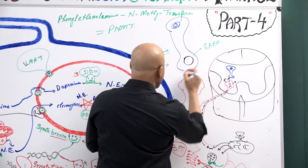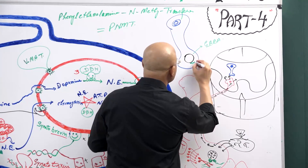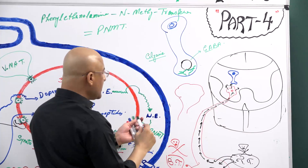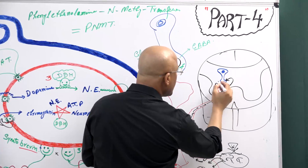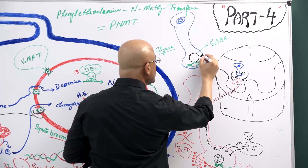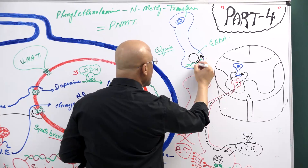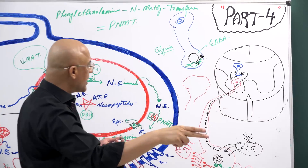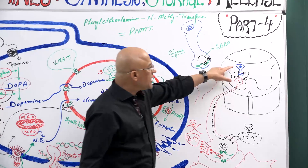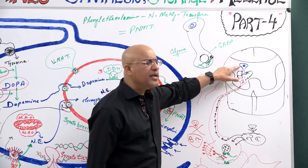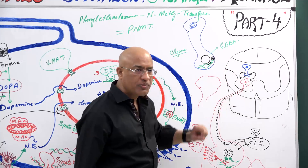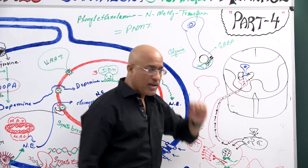Inside these inhibitory interneurons, tetanus toxin acts as a molecular cutter and destroys the SNARE proteins in the vesicles of those cells. When these SNARE proteins are destroyed, the GABAergic or glycinergic inhibitory interneurons can no longer release their inhibitory neurotransmitters.